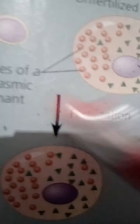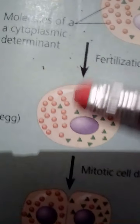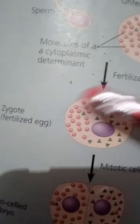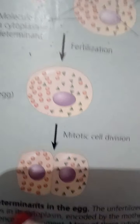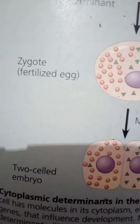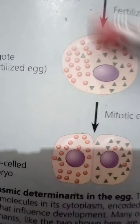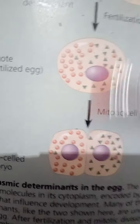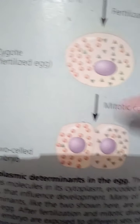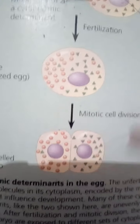Notice the nucleus in the middle, and molecules of another cytoplasmic determinant. Notice fertilization, the zygote, fertilized egg, and mitotic cell division. Notice also the two-celled embryo. The unfertilized egg cell has molecules in its cytoplasm encoded by the mother's genes that influence development. Many of these cytoplasmic determinants, like the two shown here, are unevenly distributed in the egg.